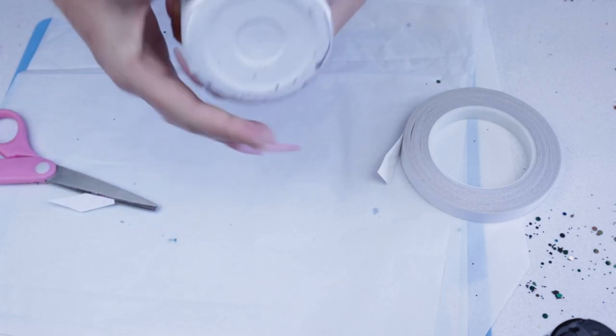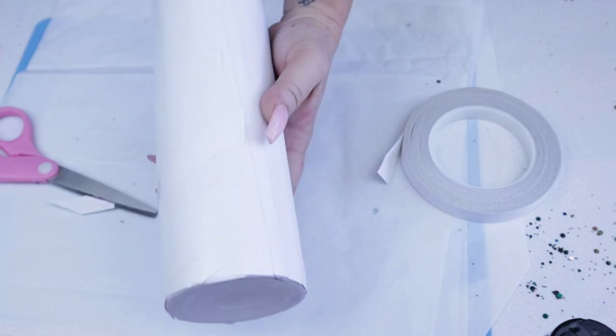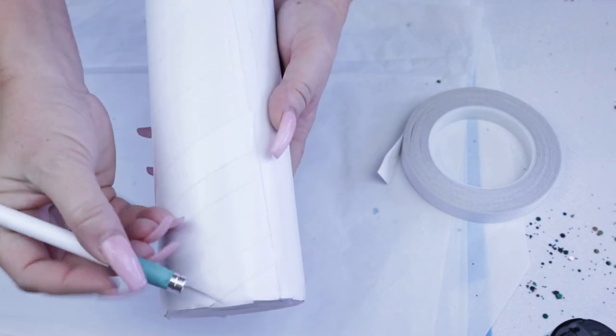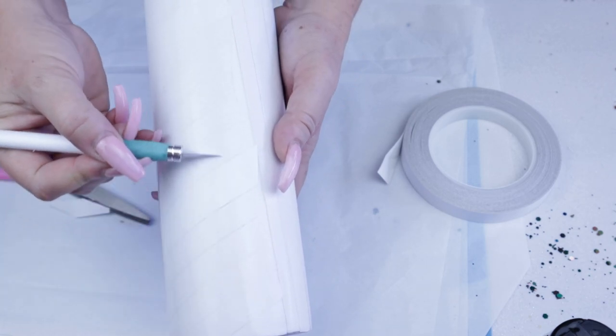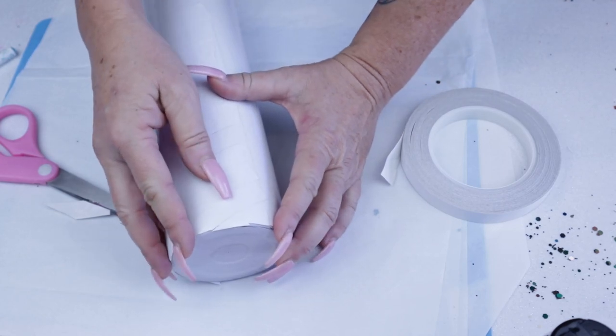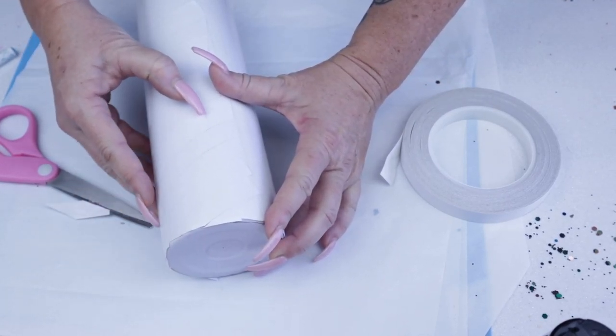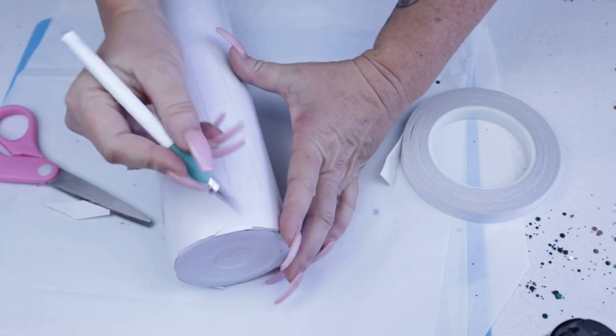Once you have everything taped off the way that you want it, now is where we're going to go ahead and cut the seam. The nails played a really good solid part in this because it was really easy for me to get down into that groove and make that a nice tight line.